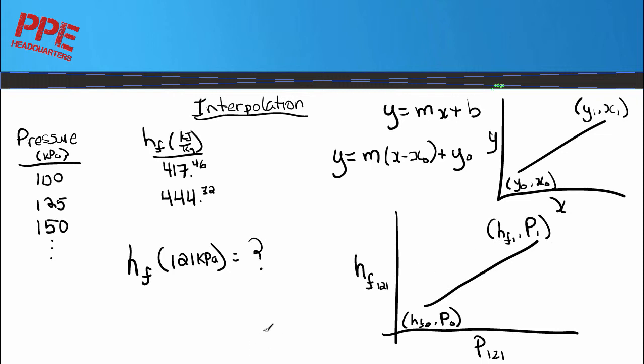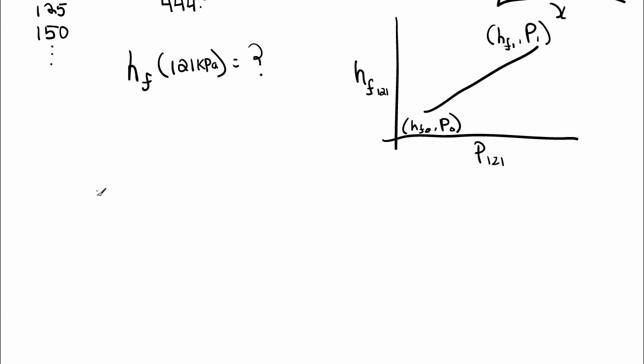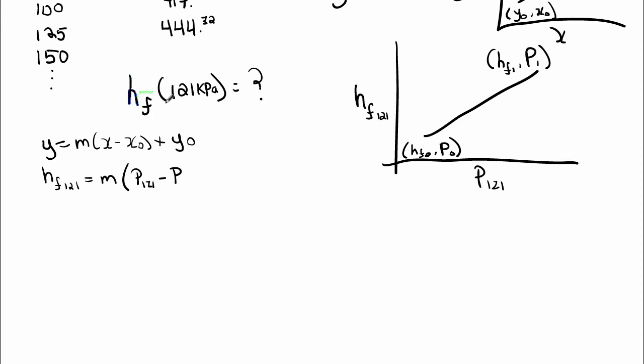So I think you can see that our formula will be - originally we had y equals x minus x naught, so mx plus b, in this case is y naught. So our formula will change to h_f, which we want to determine at 121 kPa, equals our slope times our p's. So we've got the p we want to determine, which is 121 kPa minus our p naught, which in our case is 100. So we're in between 100 and 125.